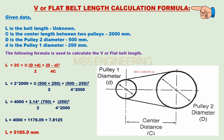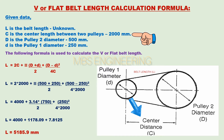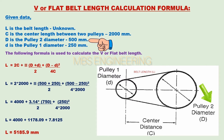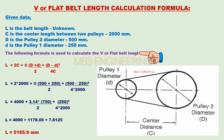We will now calculate the belt length using the given data: L is the belt length, unknown. C is the center length between two pulleys, 2000 mm. Capital D is the pulley 2 diameter, 500 mm. Small d is the pulley 1 diameter, 250 mm.